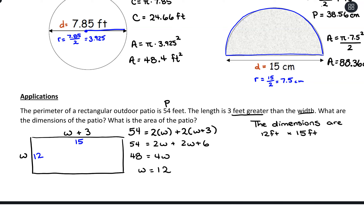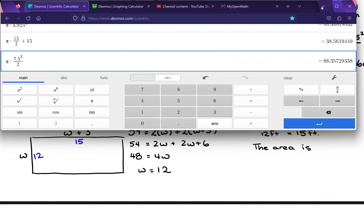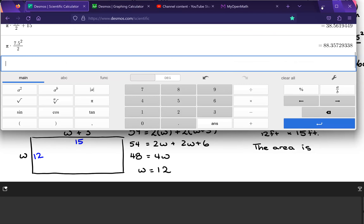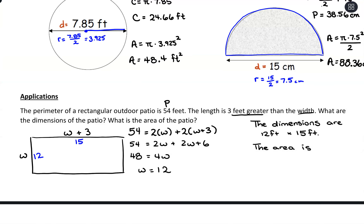For the area of the patio, we multiply the two dimensions together: twelve times fifteen equals 180 square feet.